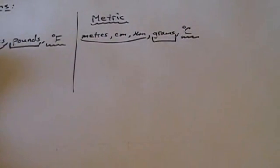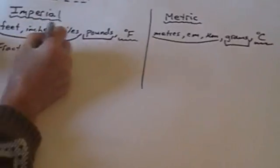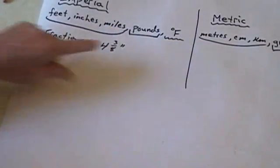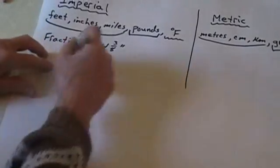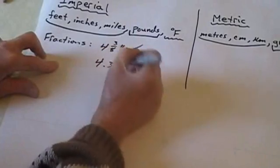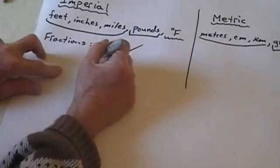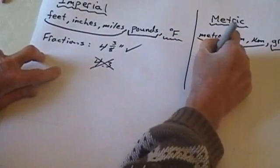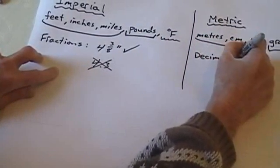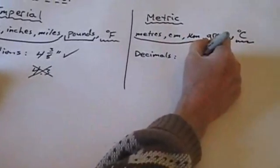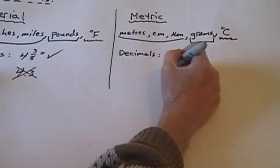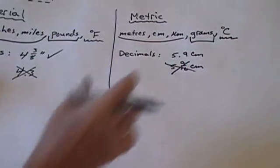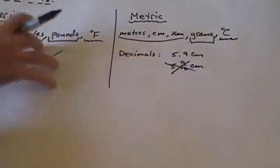In the imperial system, we use fractions. For example, we say four and three-eighths inches — that's the symbol for inches. We do not say 4.3. On the other hand, in the metric system we use decimals, and we would say 5.9 centimeters, not five and nine-sixteenths centimeters. So keep the decimals over there and keep the fractions in the imperial system.